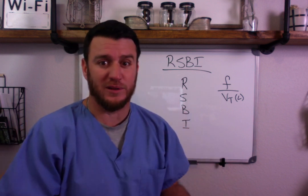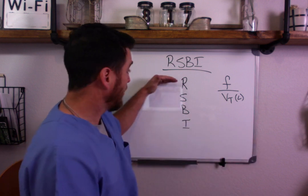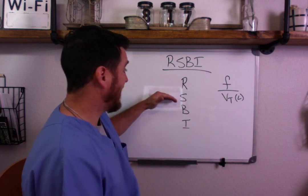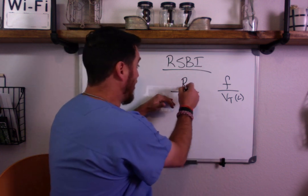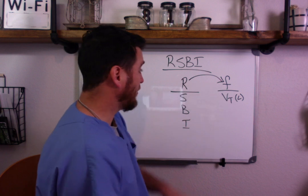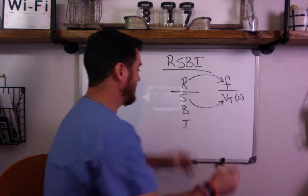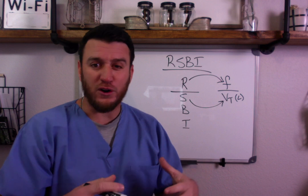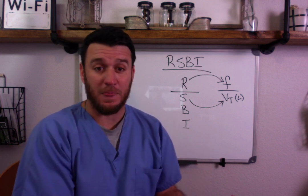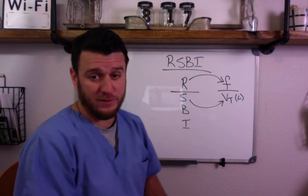How do I remember this formula? Think about what it stands for: rapid, shallow. The R — rapid — refers to frequency. The S — shallow — refers to the depth of each breath. So you have frequency over tidal volume.